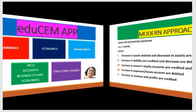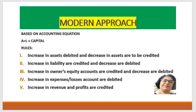Modern approach — जैसा कि हमें पता है कि जो accounting है, वो based on double entry system है — कि एक पक्ष जो है debit होता है, दूसरा पक्ष जो है credit होता है। Accounting equation हमें पता है: asset is equal to liability plus capital। तो यहाँ पे जो rules हैं: अगर asset है और वो increase हो रहा है तो उसको debit कर दो, अगर asset decrease हो रहा है तो उसको credit कर दो। इसी तरह liability अगर increase हो रही है तो उसको credit कर दो, अगर decrease हो रही है तो उसको debit कर दो। Owner की equity भी business के लिए liability होती है — अगर वो increase हो रही है तो उसको credit कर दो, अगर वो decrease हो रही है तो उसको debit कर दो। इसी तरह expense अगर increase हो रहा है या loss अगर increase हो रहा है तो उसको debit कर दो।